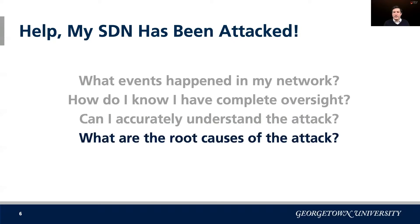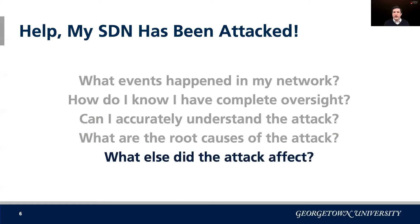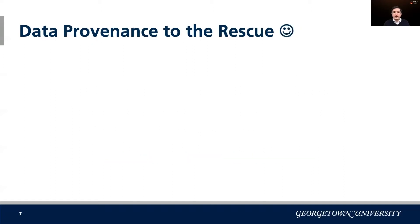What happened in the past that would have been possible causes? What did the network state look like that led to these decisions? And even if I have some evidence of the attack, how do I know that it didn't poison decision-making elsewhere? Luckily, many of these questions can be answered with data provenance.